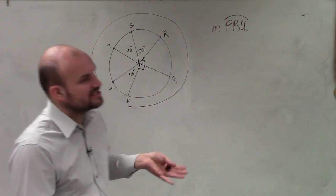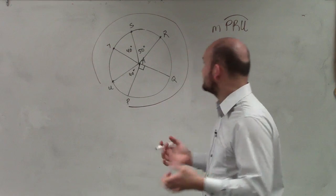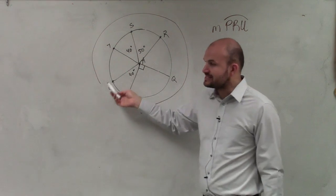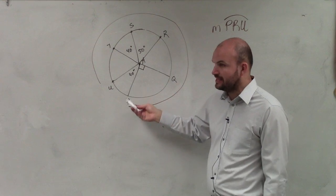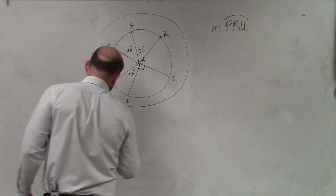It's very important you guys can understand how to identify the minor and the major arc. What this angle is producing is the central angle, which is UAP, that produces our minor arc.